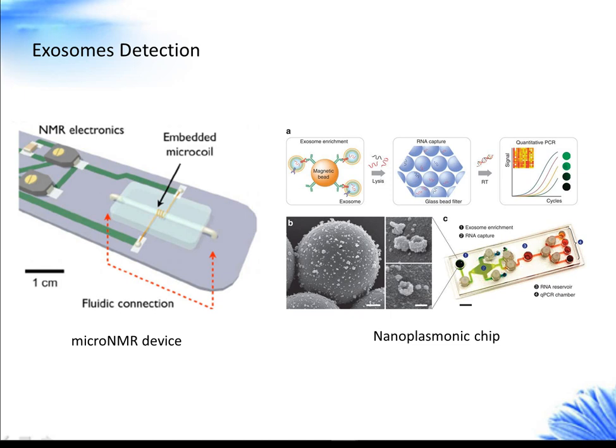In addition, other methods to detect single exosomes include atomic force microscopy, nanoparticle tracking analysis, Raman microspectroscopy, tunable resistive pulse sensing, and transmission electron microscopy.